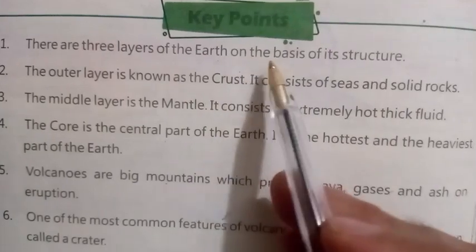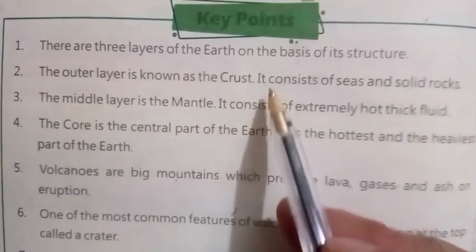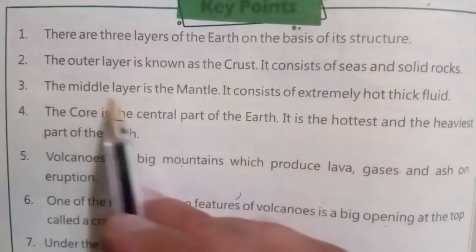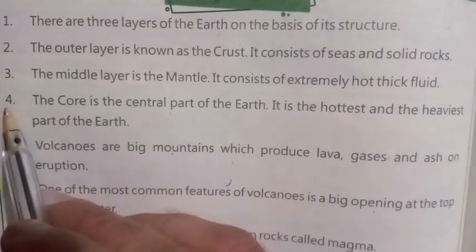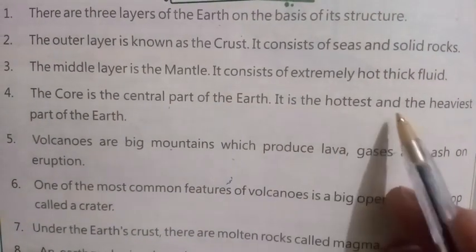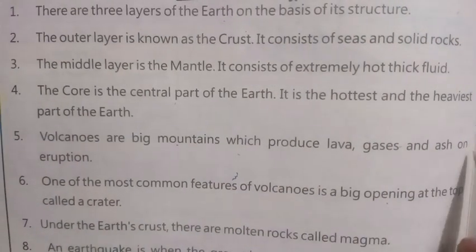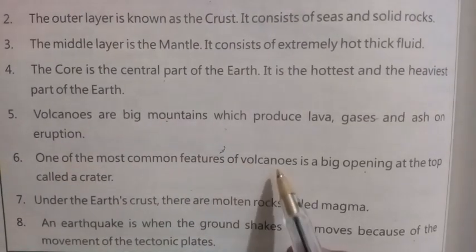Key points: Number one — there are three layers of the earth on the basis of its structure. Number two — the outer layer is known as the crust; it consists of seas and solid rocks. Number three — the middle layer is the mantle; it consists of extremely hot thick fluid. Number four — the core is the central part of the earth; it is the hottest and heaviest part. Number five — volcanoes are big mountains which produce lava, gases, and ash on eruption.